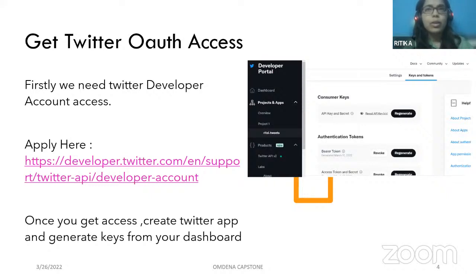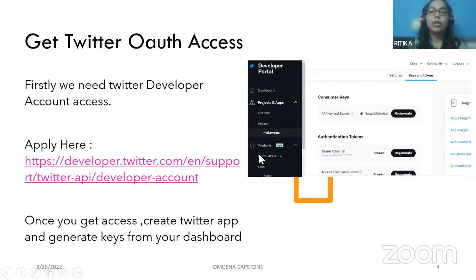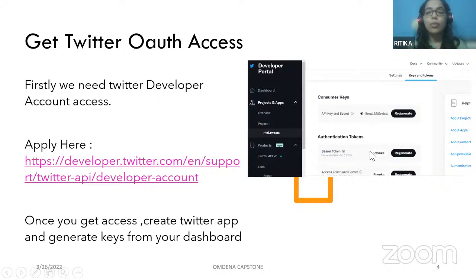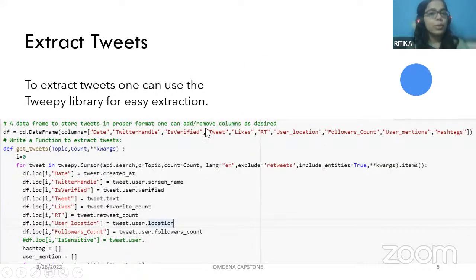Once you get Twitter access, you enter your developer dashboard where you create one project and a Twitter app. Against the Twitter app you receive consumer API keys — we require four keys in order to use the Twitter APIs. After getting Twitter access, we can now extract the tweets.